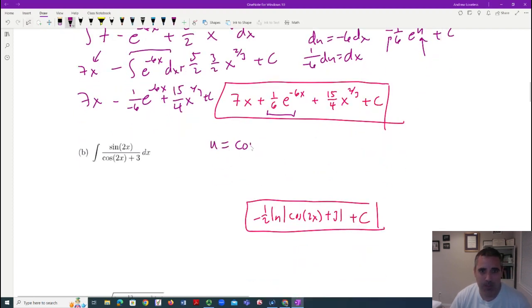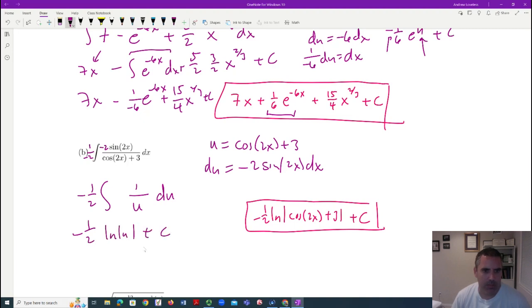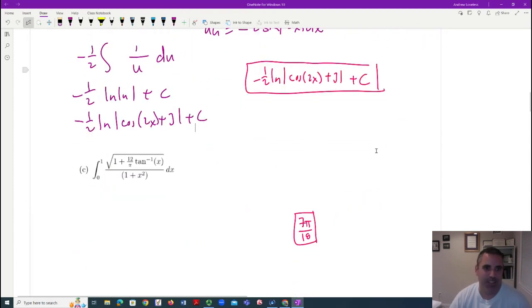You should see right away it's a substitution. In these situations, it's best to pick the denominator, especially since the derivative of the denominator is on top. You're getting a negative two sine of two X DX. So if I was doing this myself, I might just throw in a negative two here, but you can also solve for DX. So I get negative one half the integral one over U DU. And then it's negative one half the log of U plus C. The log of cosine of two X plus C.